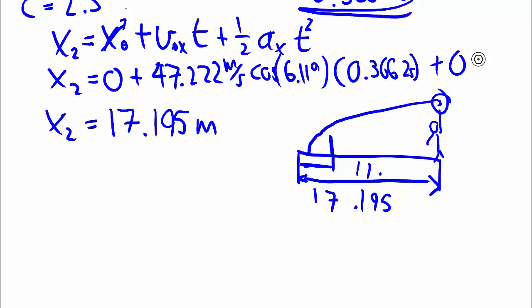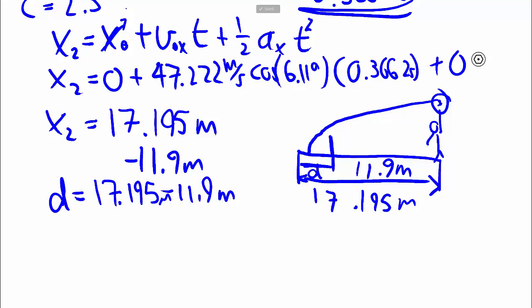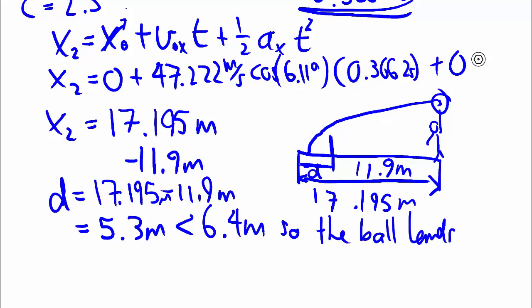We just want this bit and we want to make sure that that bit is less than 6.4 meters in front of the net. To find that out, of course, we have to subtract the original 11.9 meters. So this particular distance here is 17.195 minus 11.9 meters, giving us 5.3 meters, which is in fact less than the 6.4 that's required. So the ball lands in as a valid serve.